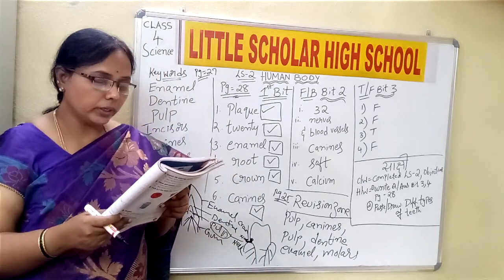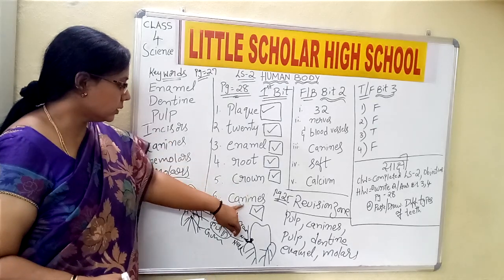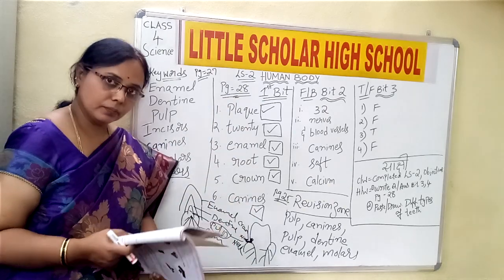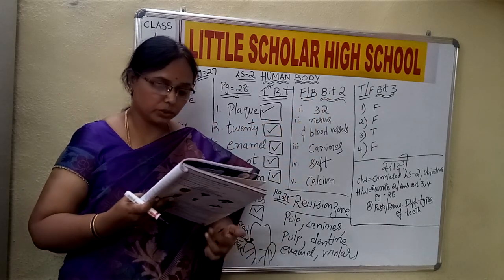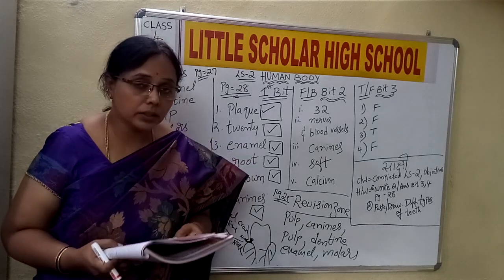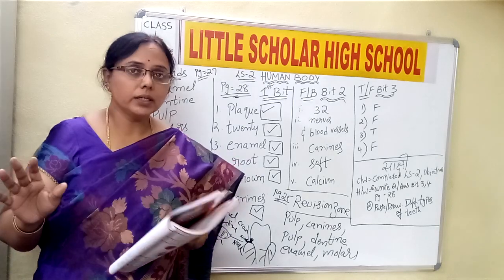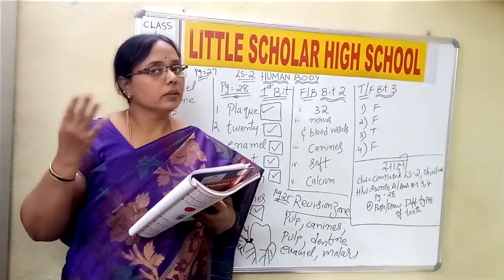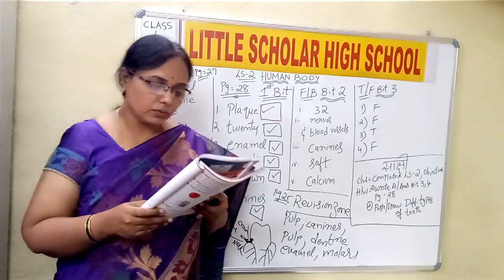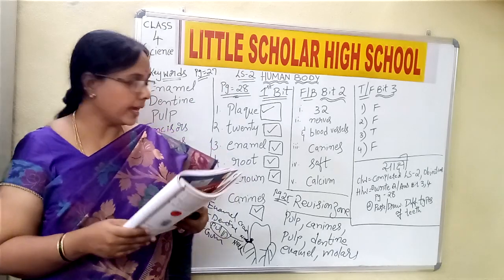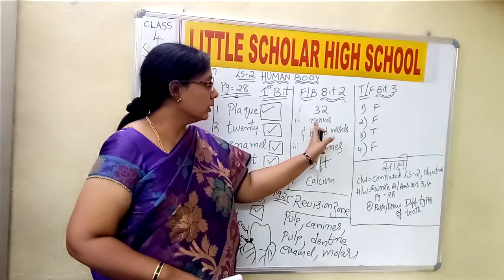The sharp pointed teeth found next to the incisors are canines. After incisors, which one comes? Canines. So the answer for question six is canines. We are done with bit number one. Now shall we move to bit number two — fill in the blanks. An adult has how many permanent teeth? It is 32. These are the permanent teeth, and the permanent set of teeth are 32 in number. Then the pulp is the soft part of the tooth and has nerves and blood vessels — so write in the blanks: nerves and blood vessels.